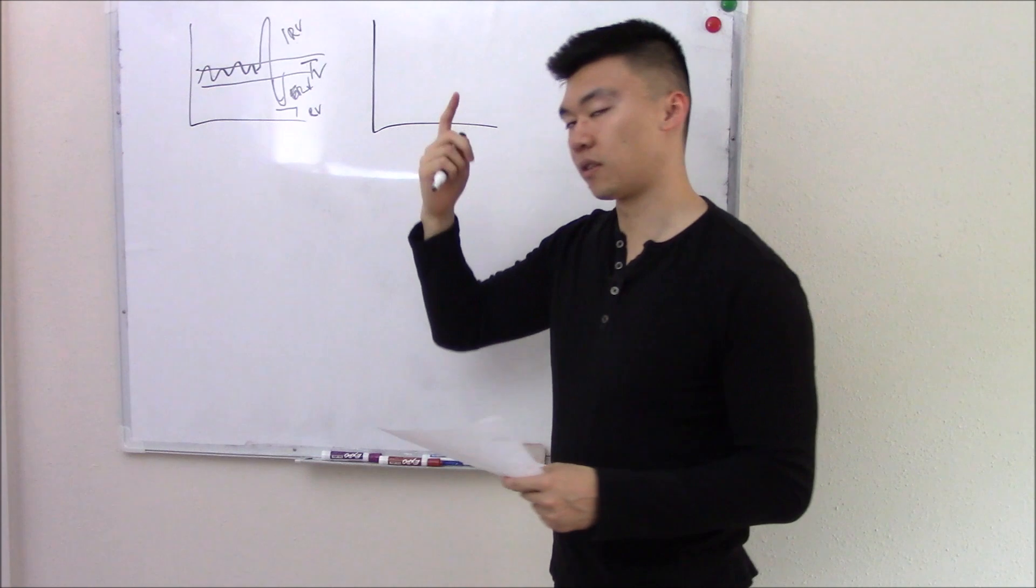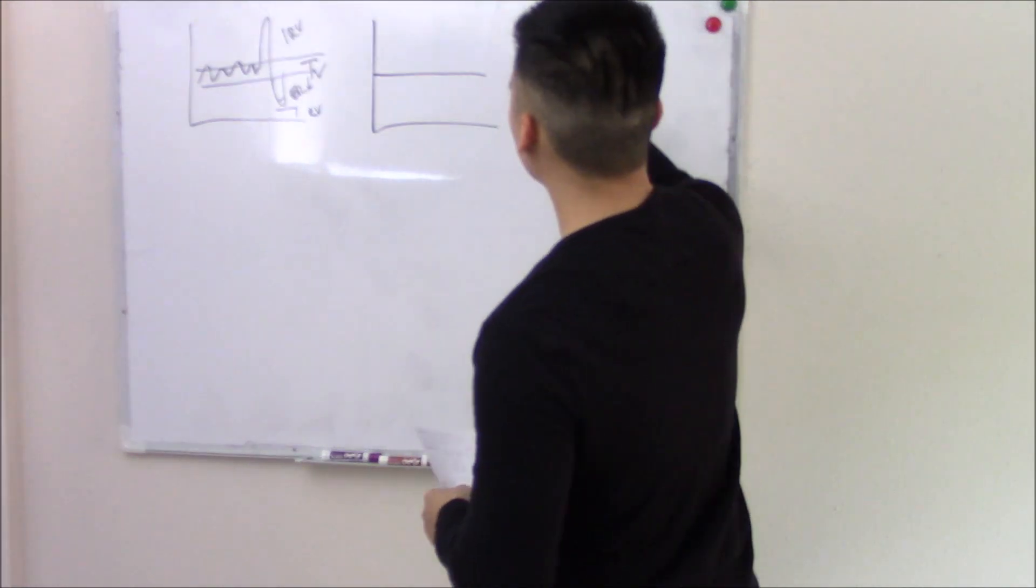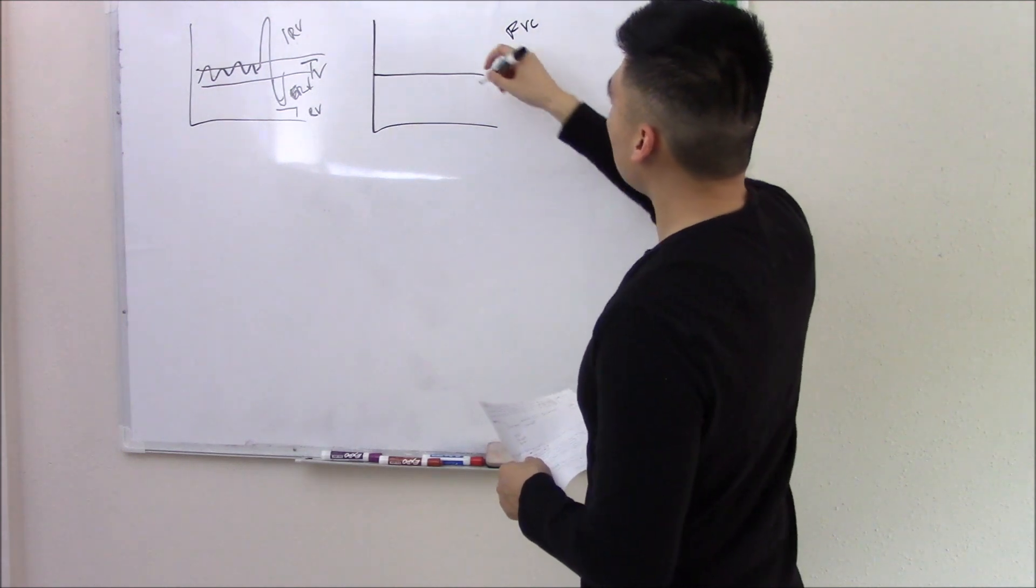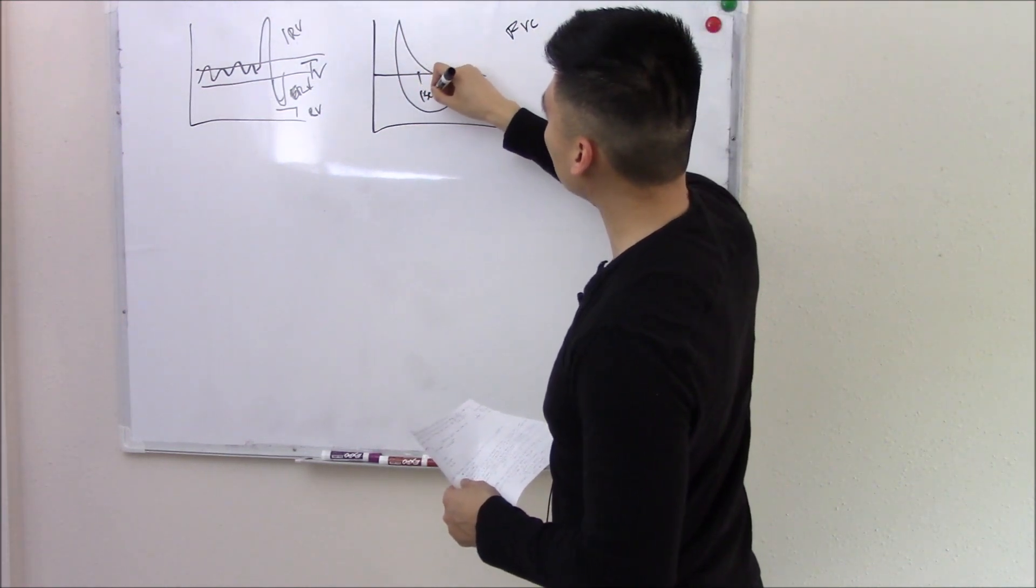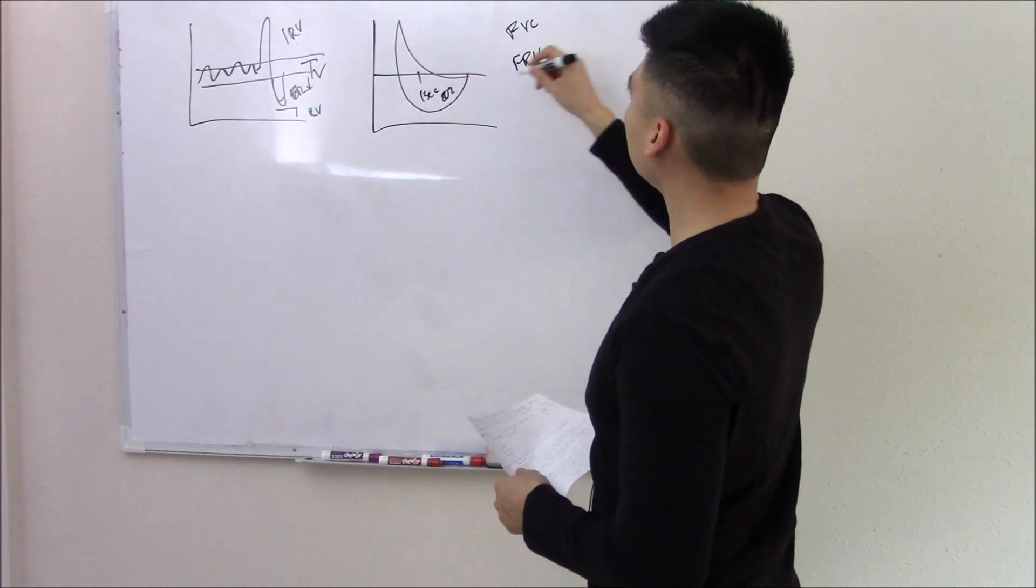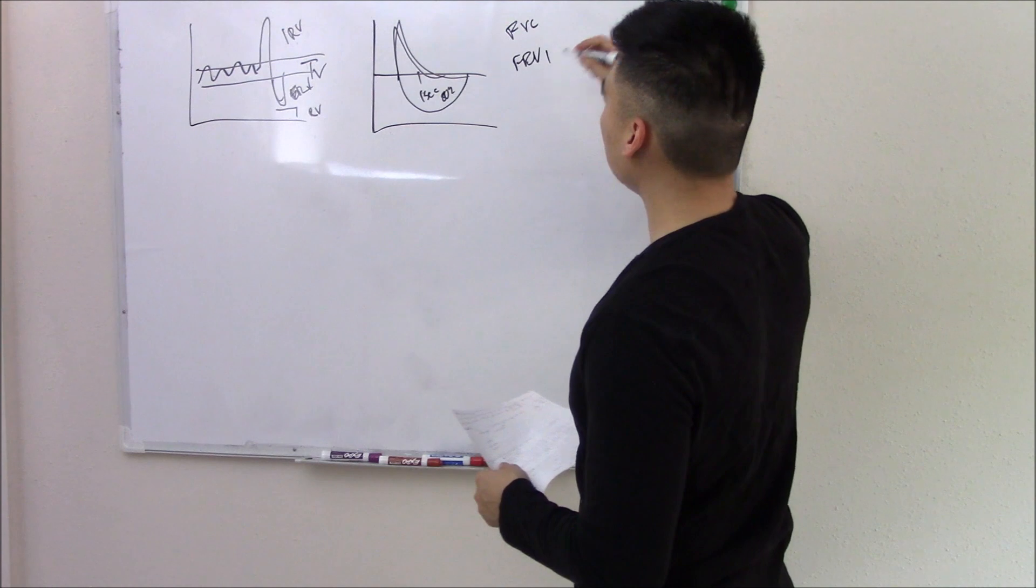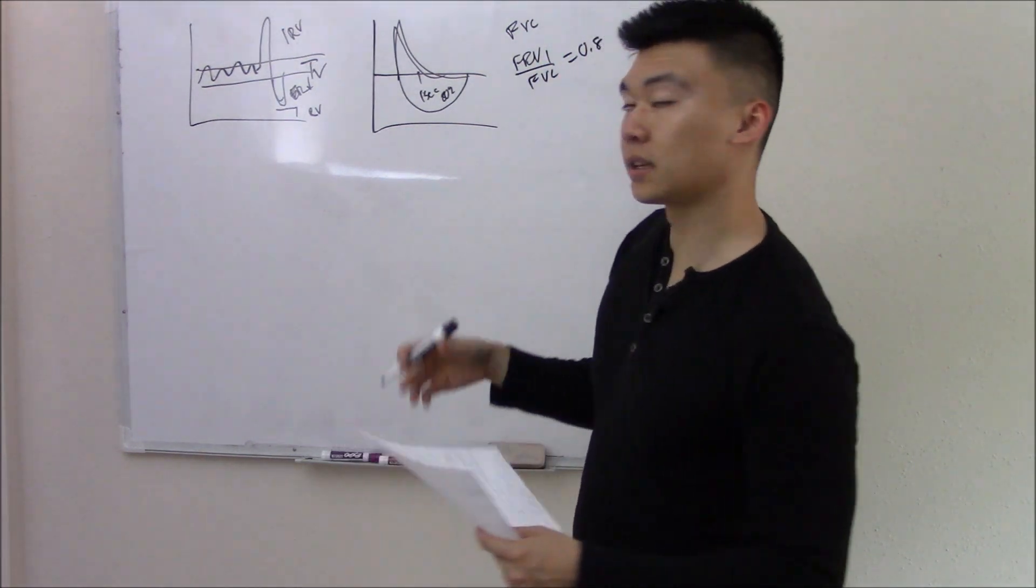Another way we can measure it is not only measuring the volume, but how forcefully you can breathe out that volume. We call that your forced vital capacity. So you take a deep breath in and then you breathe it out. Within one second, you should breathe out about 80%. So FEV1, that's the forced expiratory, over FVC, should be 0.8.